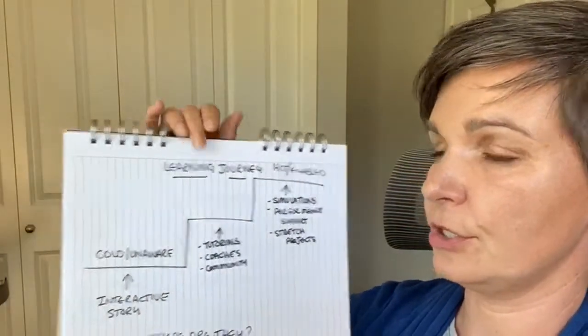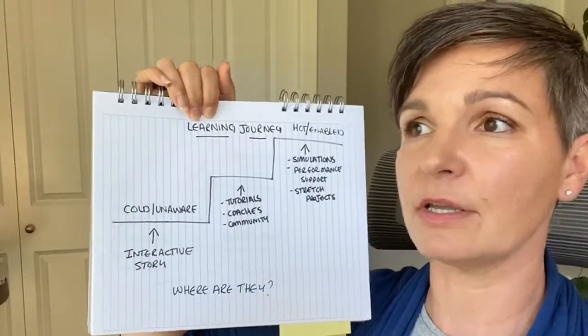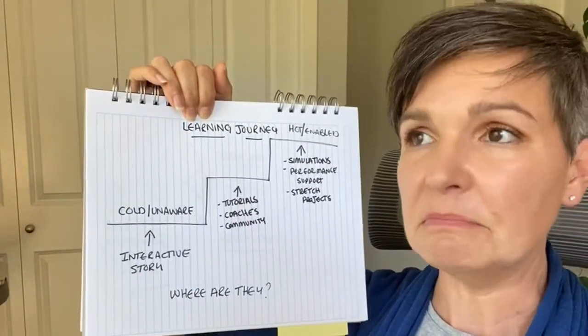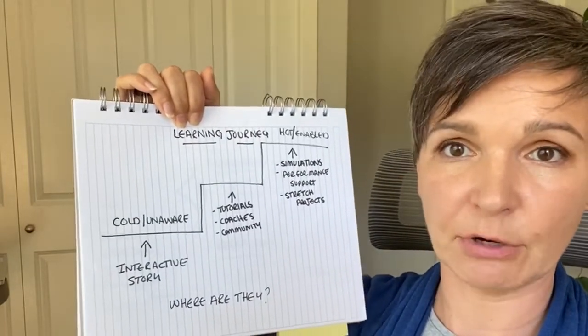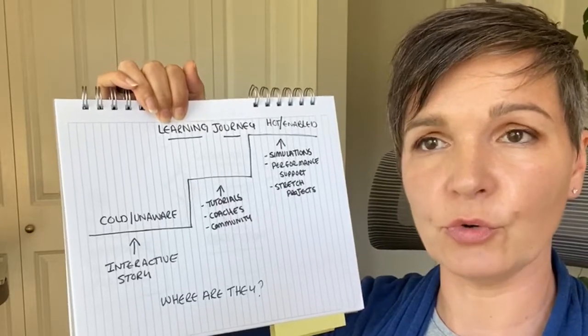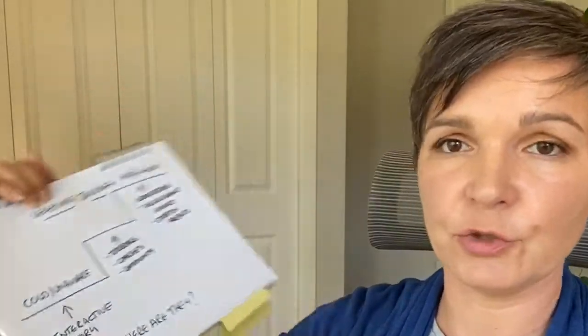When I talk about users or humans or audiences, I'm mostly talking about professional adults — people we design learning for who are trying to perform something in a better way. We do compliance courses, safety courses, courses to help people sell better, be better leaders, negotiate better, do their jobs more efficiently — emotional intelligence, sexual harassment, all of it.